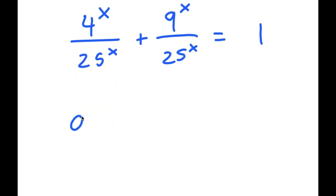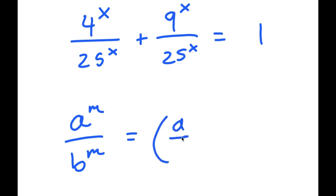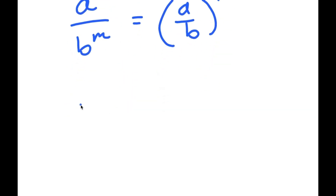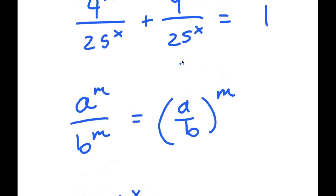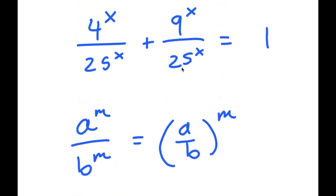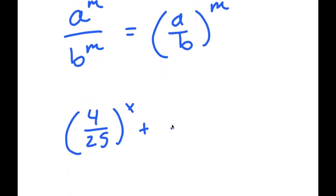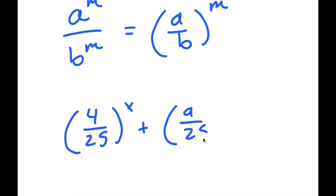Now if I have something in the form a to the power of m over b to the power of m, this is equal to a over b to the power of m. So 4 to the power of x over 25 to the power of x turns into 4 over 25 to the power of x, and 9 to the power of x over 25 to the power of x turns into 9 over 25 to the power of x.